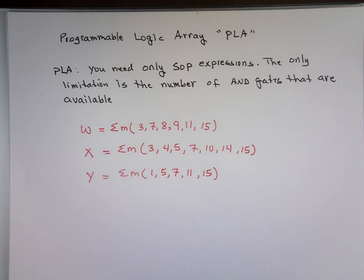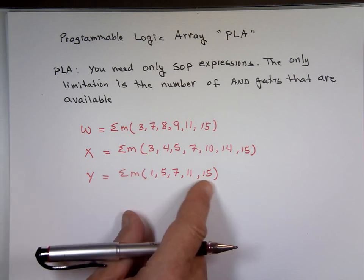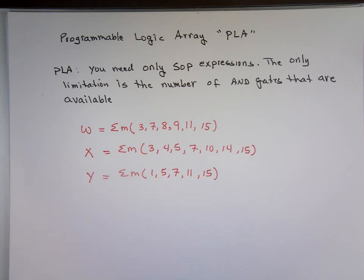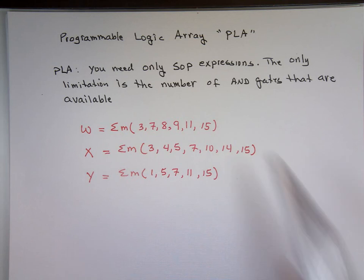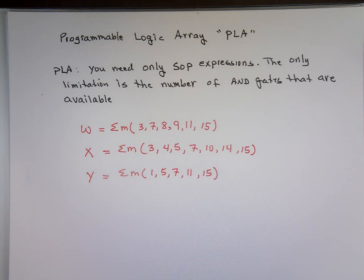It says we only need to get the expression for sum of product, which means I have to do a K-map for each one. That's four inputs because it goes to 15. Four variables, A, B, C, D. It says the only limitation is the number of AND gates. So if I can reduce the number of AND gates, I'm going to use that. Because you're limited on that board by how many AND gates you have there.